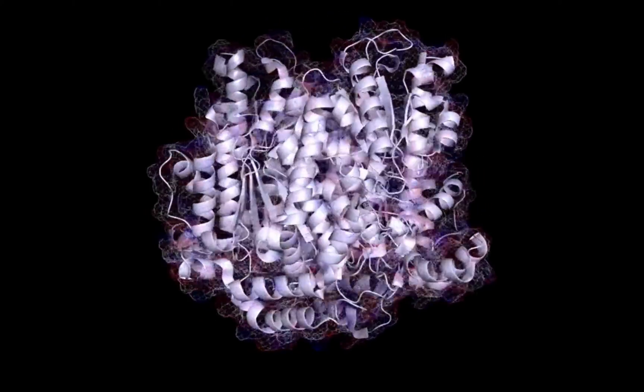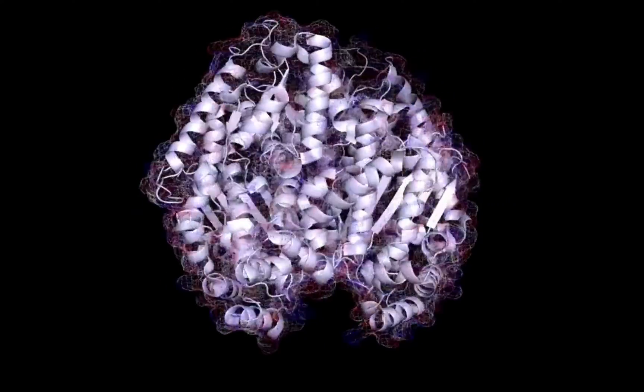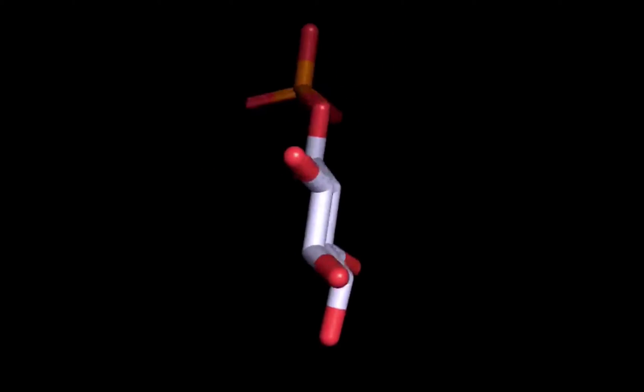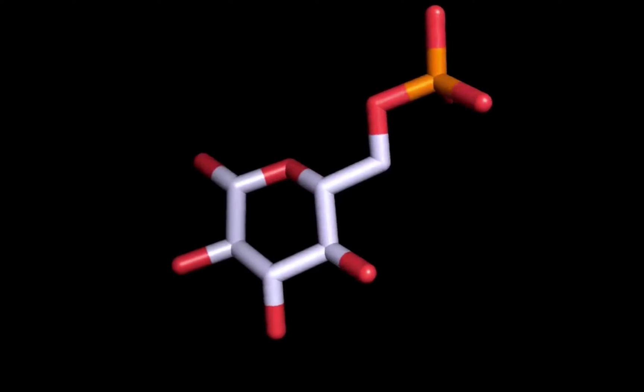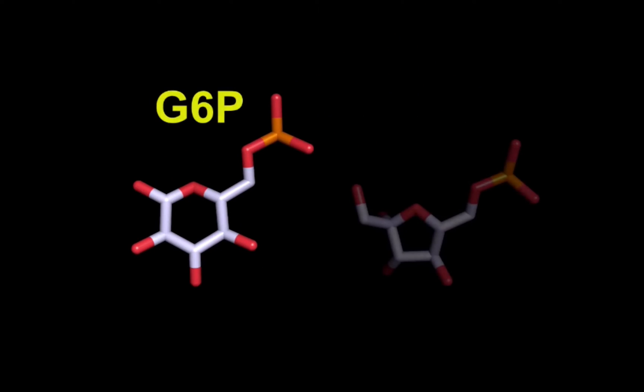You may see phosphoglucoisomerase called a few names, one of which is glucose-6-phosphate isomerase. But both of these names contain the same information. In glycolysis, the molecule that acts as the substrate is glucose-6-phosphate, or G6P, and it undergoes an isomerization reaction, forming fructose-6-phosphate, which we'll call F6P.